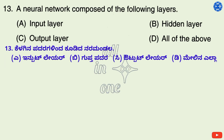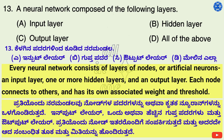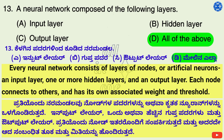Question 13. A neural network is composed of the following layers — Options: A. Input layer, B. Hidden layer, C. Output layer, D. All of the above. Every neural network consists of layers of nodes or artificial neurons: an input layer, one or more hidden layers, and an output layer. Each node connects to others and has its own associated weight and threshold. Therefore, right option is D: All of the above.